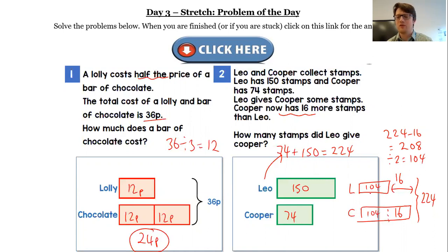So Leo now has 104 stamps, and Cooper now has 104 add 16, which is 120 stamps. But the question is how many stamps did Leo give to Cooper?